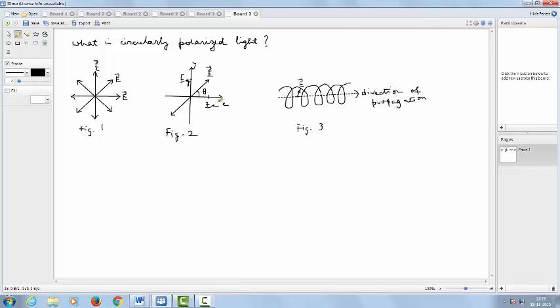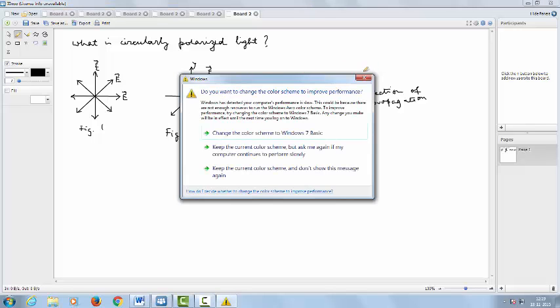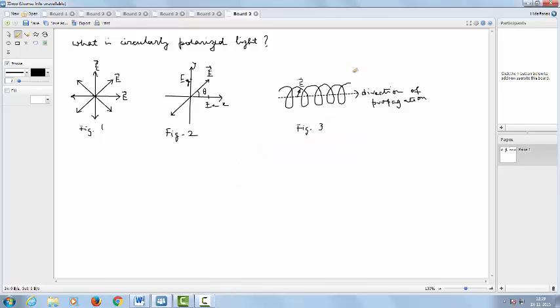If the amplitude of Ex wave and Ey waves are the same and the phase difference between them is 90 degrees, what we obtain is a circularly polarized light wave. In other situations where the amplitude of Ex and Ey are not the same, we would obtain elliptically polarized light.